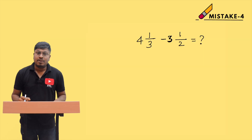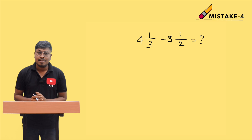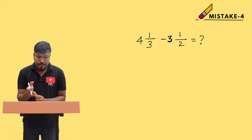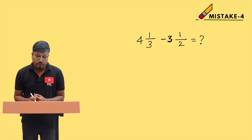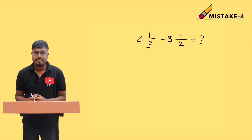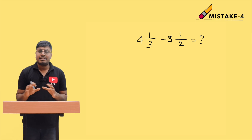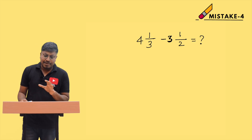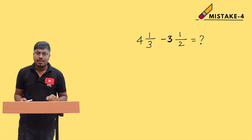This is video number 4 of the mistake series, on the topic of simplification — specifically the concept of mixed fractions. Look at the question: 4 and 1/3 minus 3 and 1/2 equals question mark. This type of mixed fraction question is usually solved by students using two different methods.